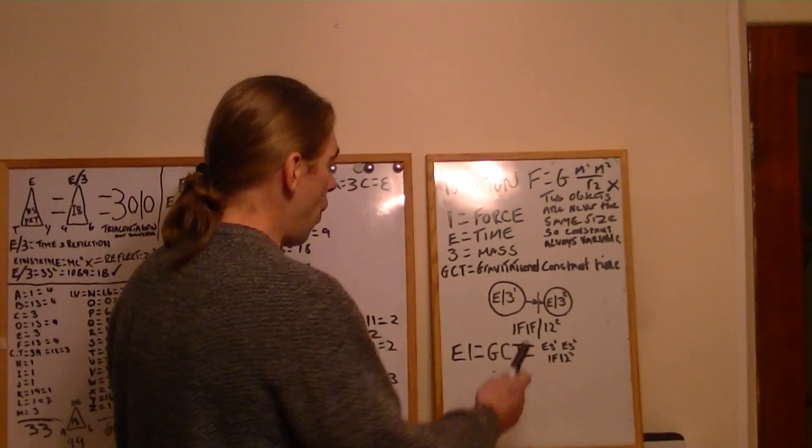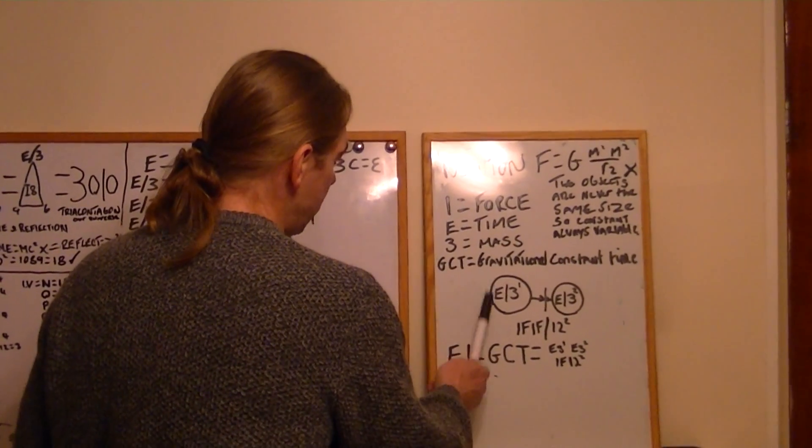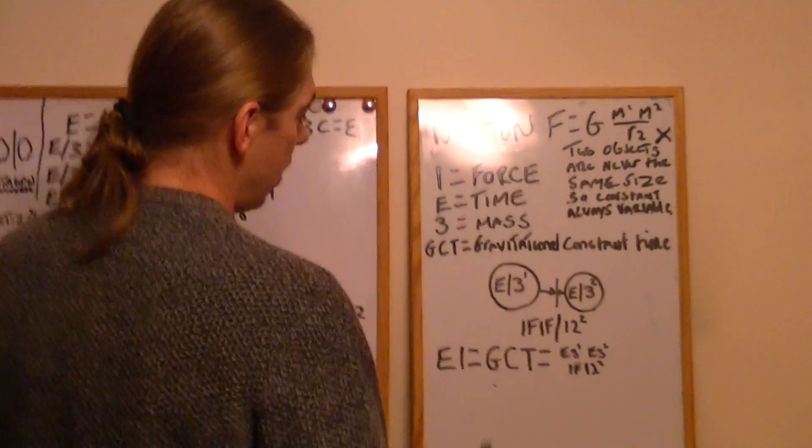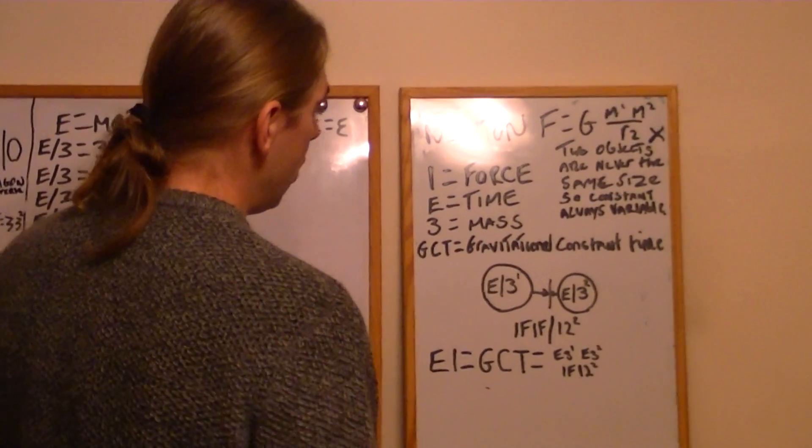Let's have a look at this. So, we have a variable constant. Here's the time and mass. Time and mass. As you can see, one's bigger than the other, so it would be variable.